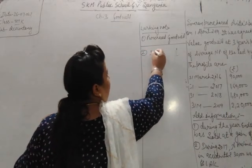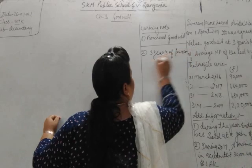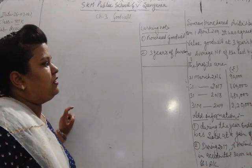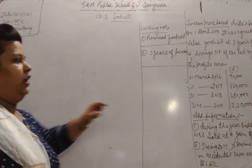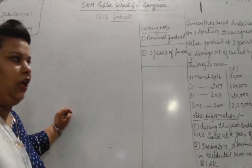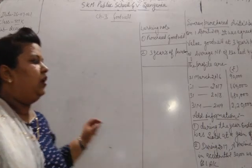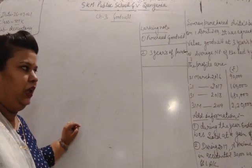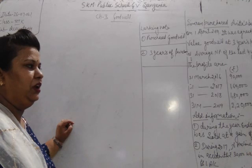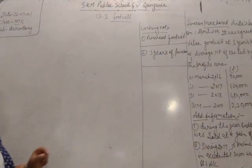The profits for the last four years are given: for the year ending 31st March 2016, it is Rs. 90,000; for 31st March 2017, it is Rs. 1,60,000; for 31st March 2018, it is Rs. 1,80,000; and for the year ended 31st March 2019, it is Rs. 2,20,000. These are the profits given to us.